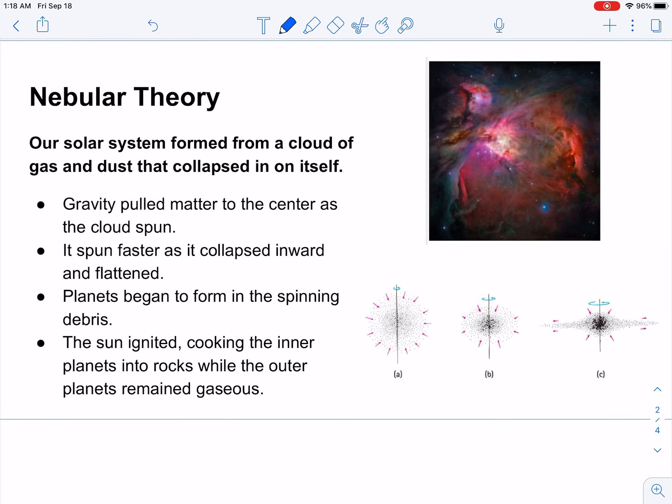Now, nebular theory is the widely accepted theory to explain the formation of our solar system, that basically we started off as a very large cloud of gas and dust, and that all collapsed in on itself due to gravity pulling everything inwards. And what's interesting is that our solar system also began to spin as this was happening.